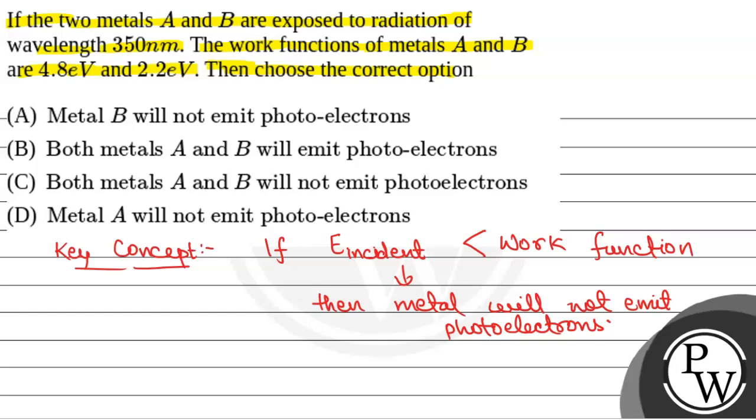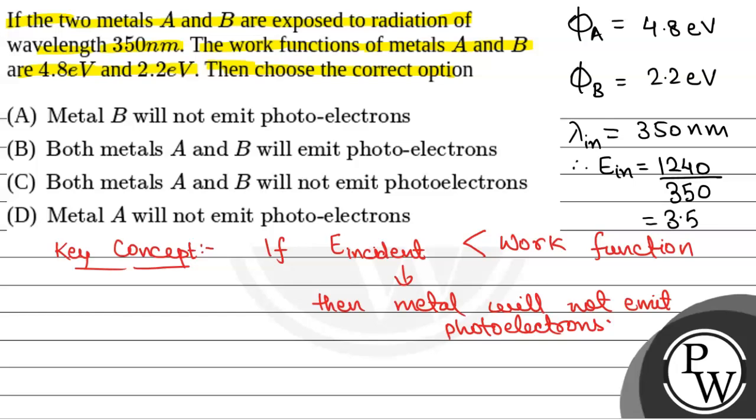Now, we have been given work function of metal A, phi A that is equal to 4.8 electron volt and work function of metal B that is equal to 2.2 electron volt. Wavelength of incident radiation is equal to 350 nanometer. Therefore, energy of incident radiation will be equal to 1240 by wavelength in nanometer that is equal to 350. So, this is equal to 3.54 electron volt. This is energy incident.